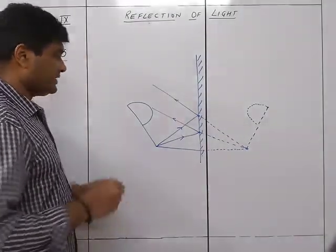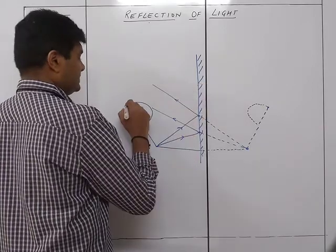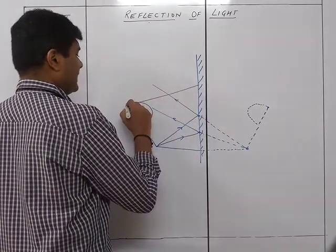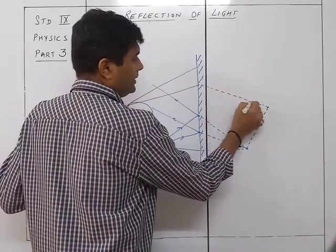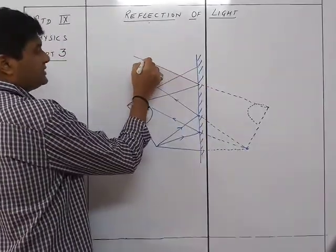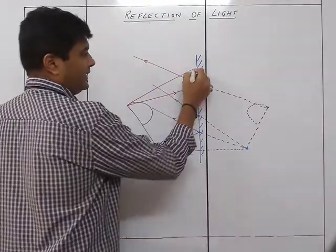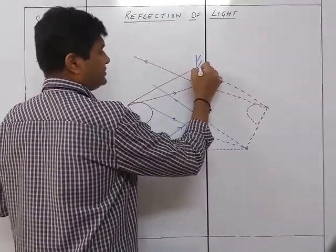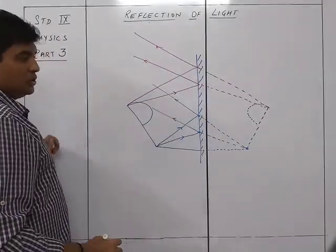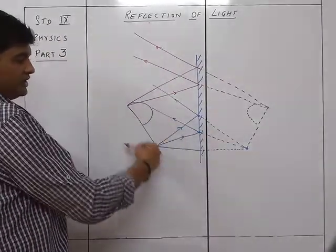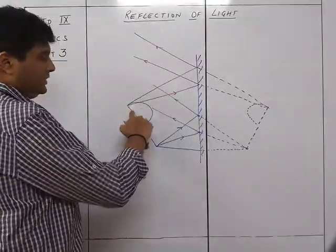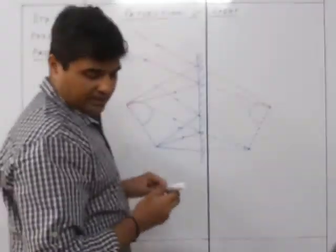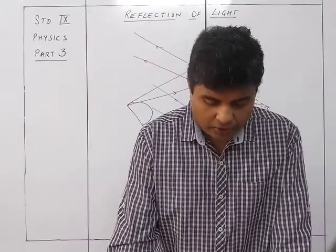From the second point, we similarly take two rays, connect them to the mirror, and extend them as dotted lines behind the mirror to meet the image point. This gives us the object on one side and its laterally inverted image on the other side — that is lateral inversion shown through a ray diagram.